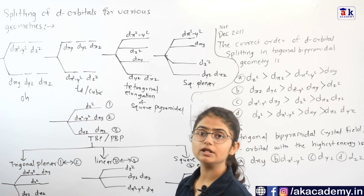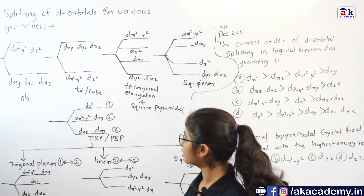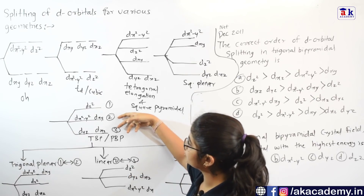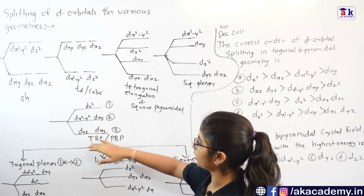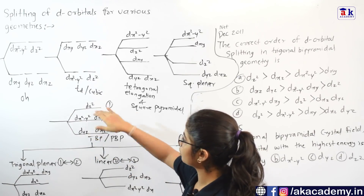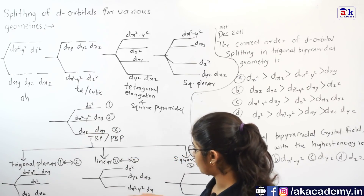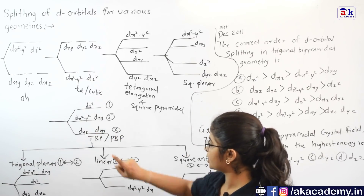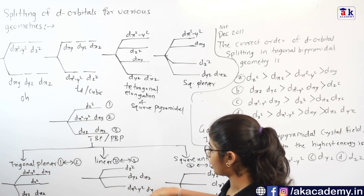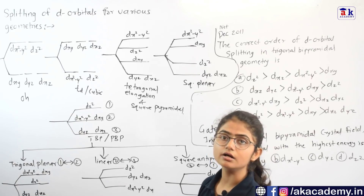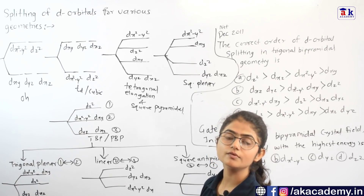For linear geometry, you swap positions two and three from the TBP diagram. DZ square stays at the top, but the second and third groups swap, so DYZ and DXZ go up and we get the splitting of d orbitals for linear geometry.